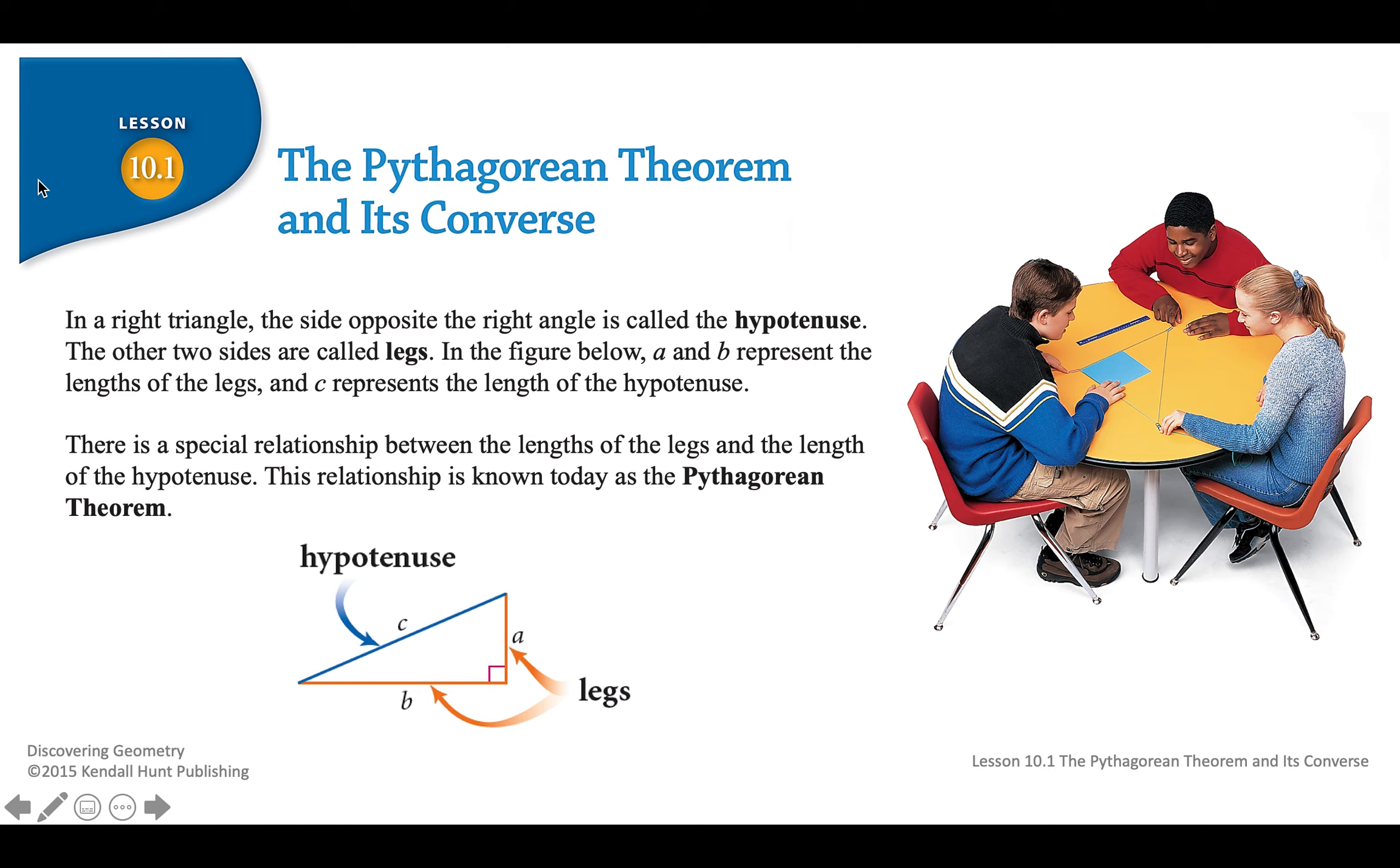So there's a picture here. It shows the hypotenuse, it shows the legs on a right triangle. So a triangle containing a right angle. So in a right triangle, the side opposite the right angle is called the hypotenuse. Notice that that blue side labeled C is across from the right angle. The other two sides are called legs. In the figure below, A and B represent the lengths of the legs, and as I said before, C represents the length of the hypotenuse.